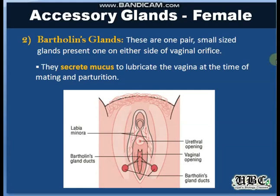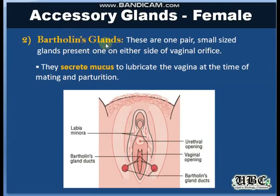The Bartholin glands (bulbovestibular glands) are two small glands present at the vaginal orifice. They are homologous to the male bulbourethral glands and secrete mucus that helps lubricate the vagina during mating or copulation and during childbirth (parturition).